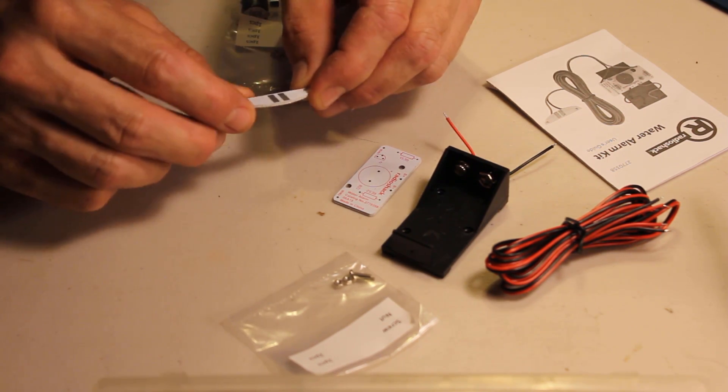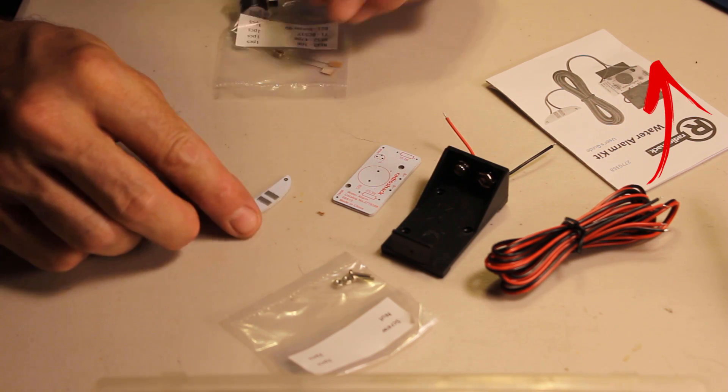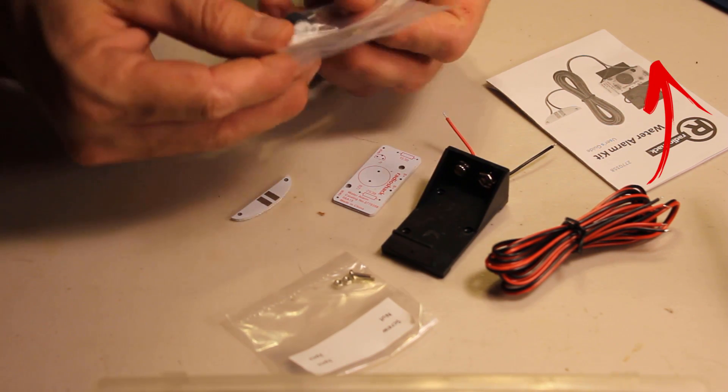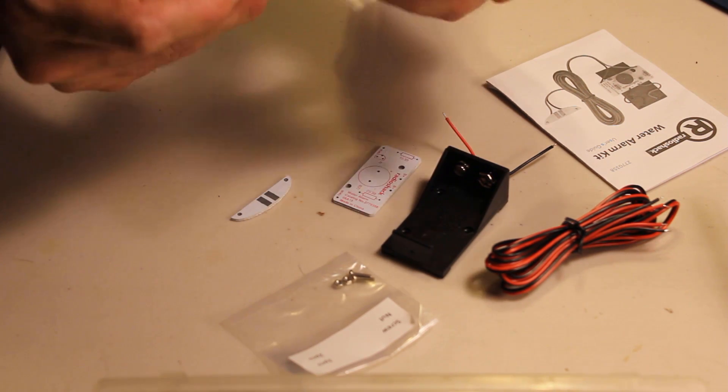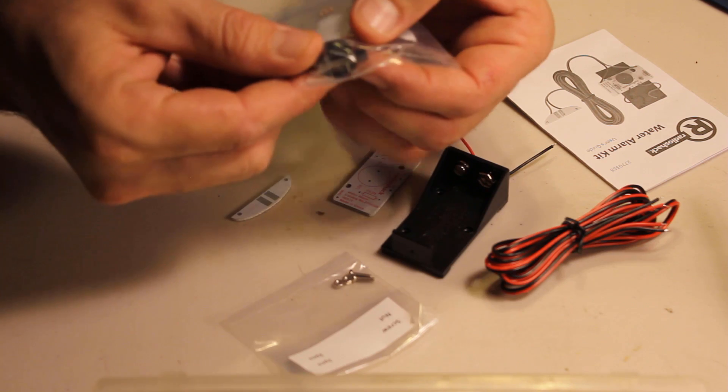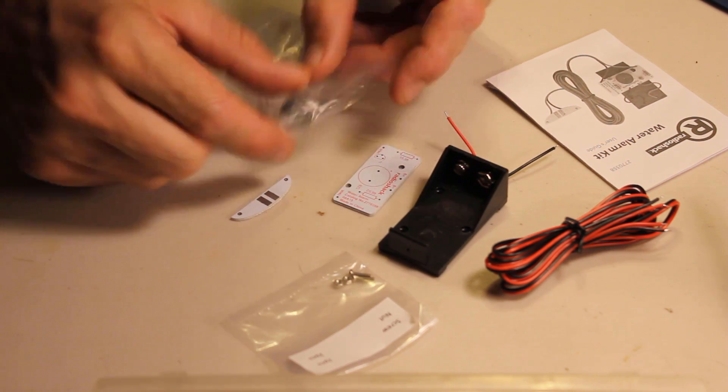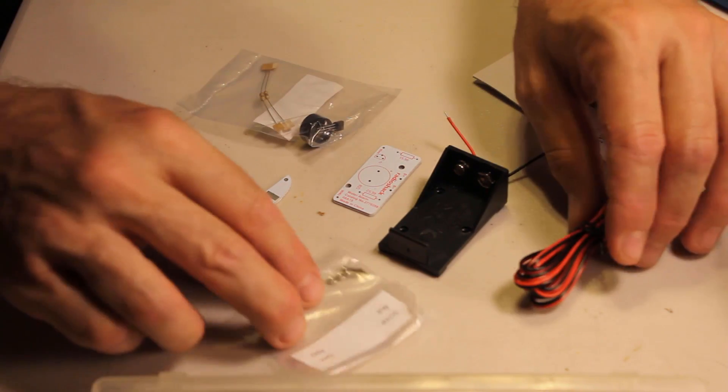And we have the sensor. This looks like a positive and negative here. Two sides on that. And then in here we have the buzzer. We have two resistors. And we have a transistor. So that's everything.